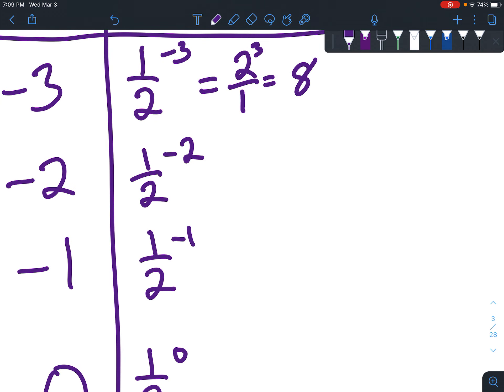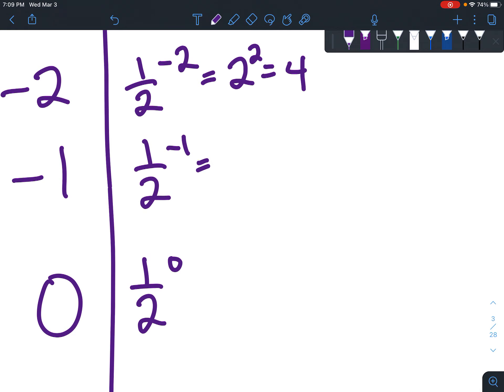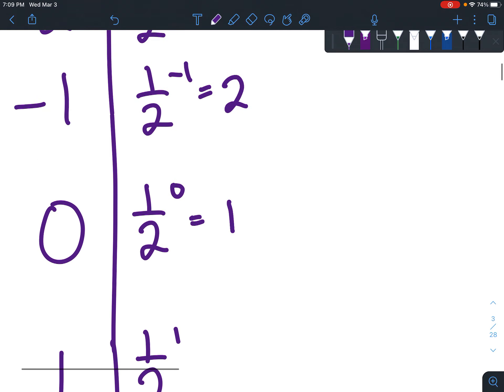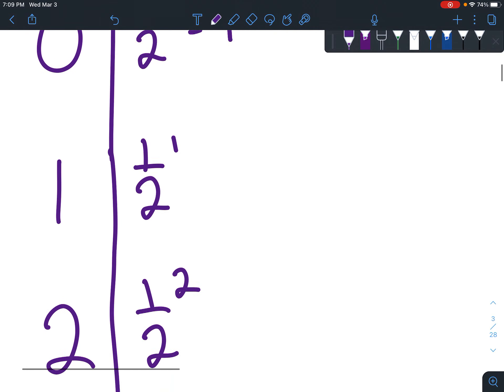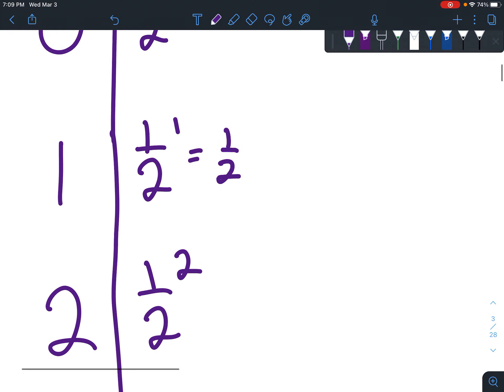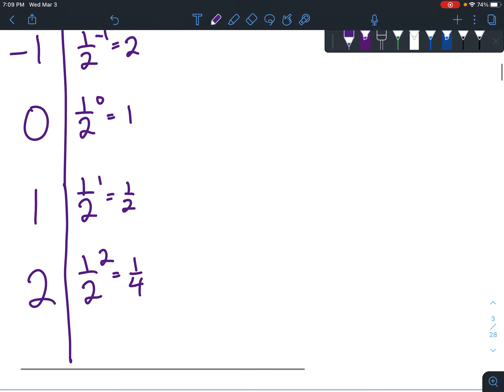And then 1 half to the negative 2 equals, we don't need to write the 1 on the bottom this time, 2 squared, which is 4. And then 1 half to the negative 1 equals regular 2. 1 half to the 0 is 1, because anything to the 0 power is 1. 1 half to the first equals 1 half. And then 1 half squared equals 1 fourth. And now let's graph these.